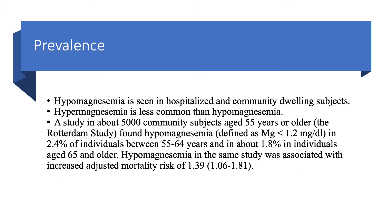What about the prevalence of hypomagnesemia? It is seen in both hospitalized patients and community-dwelling subjects, whereas hypermagnesemia is less common. The Rotterdam study — which I referenced previously when discussing hypokalemia and hyperkalemia — studied 5,000 community-dwelling subjects aged 55 and older. They found hypomagnesemia, defined as less than 1.2 milligrams per deciliter, in 2.4 percent of individuals between ages 55 and 64.